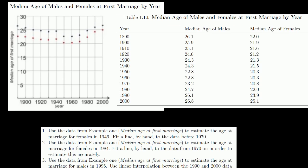So I have this chart here — median age at first marriage by year. Remember, median is the middle value; for example, given 3, 7, and 9, the median is 7. So this shows the median age of males and females at first marriage. In 1900, the median male was getting married at around just over 25, almost 26, while the median female was getting married at around 22 or 23 years old.